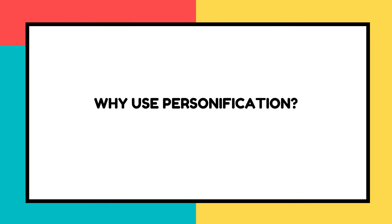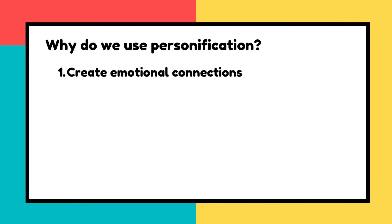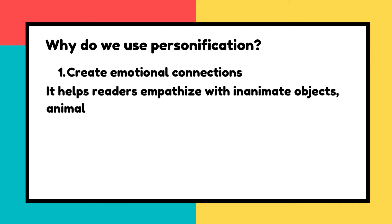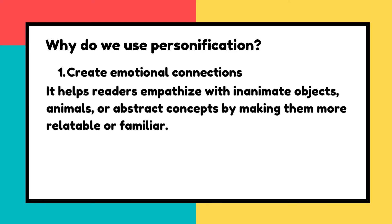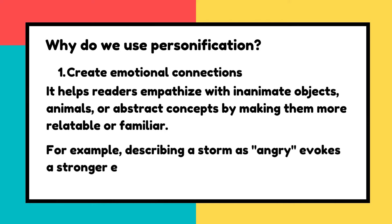Now that we've looked at a few examples, let's discuss why we use this literary device of personification. The first reason is to create emotional connections — it helps the reader empathize with inanimate objects, animals or abstract concepts by making them more relatable. For example, describing a storm as angry — 'the angry storm rummaged through the town' — evokes a stronger emotional response, so readers feel how strong the storm was.